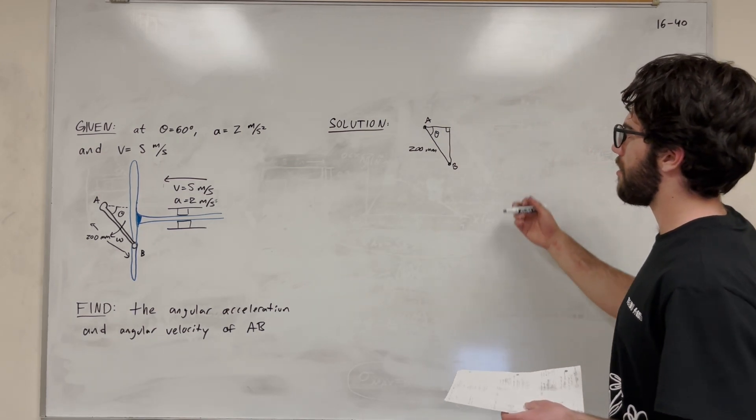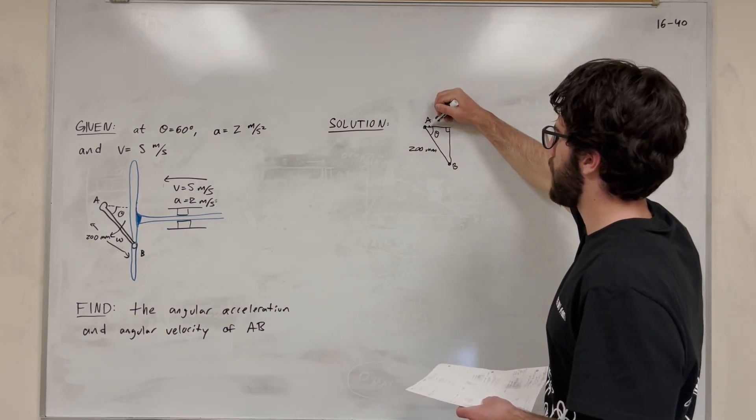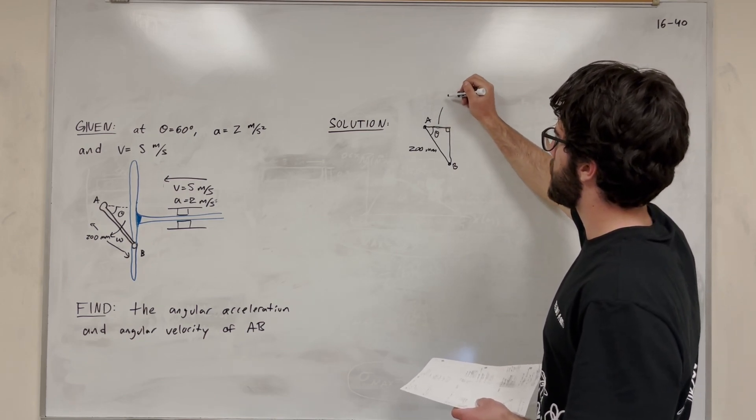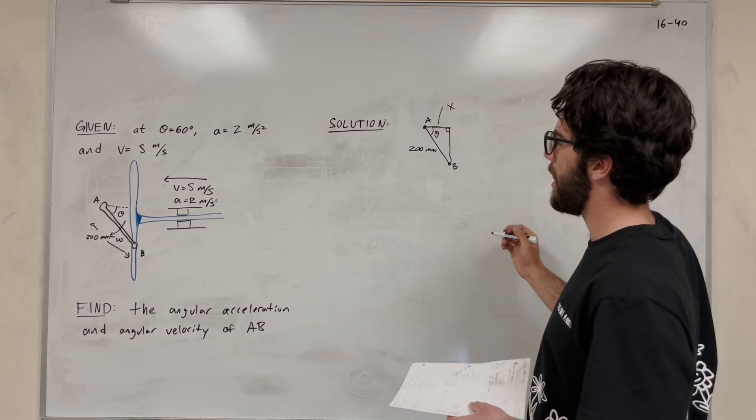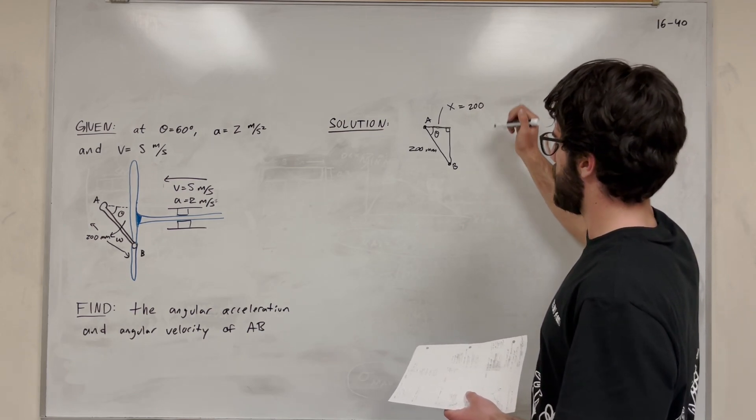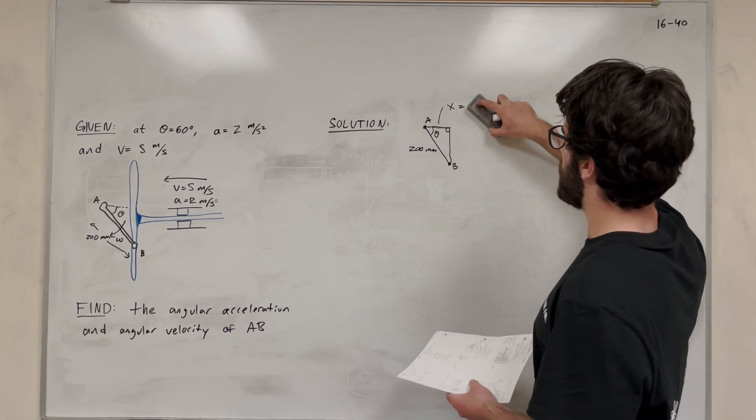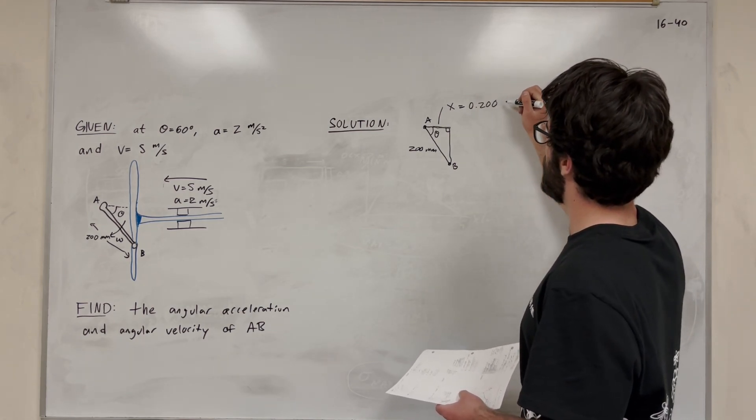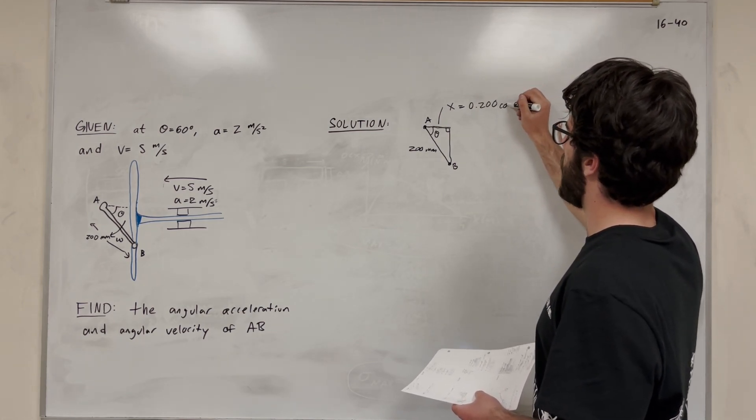Now, our velocity, right? What is our velocity? Well, this x component represents basically our position. So we can label this to be x. And what's x equal to? Well, it's equal to 200, or not 200, let's do 0.2. Let's convert to meters right away. Okay, 0.200 times cosine of theta.